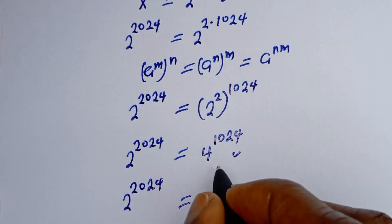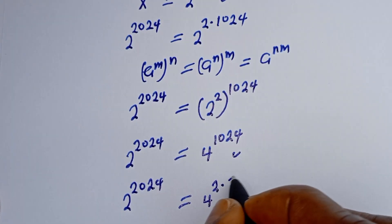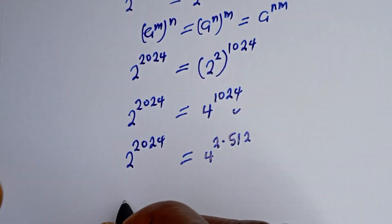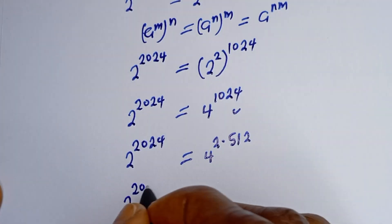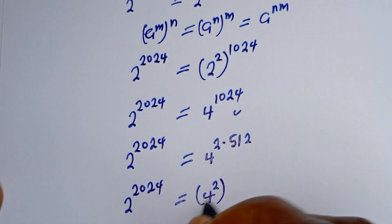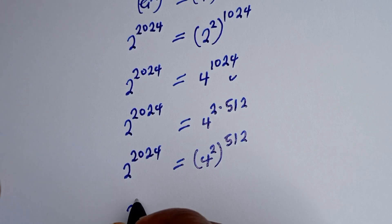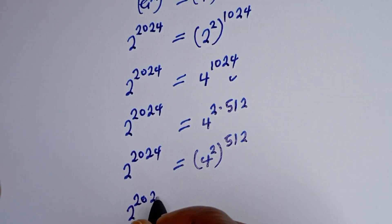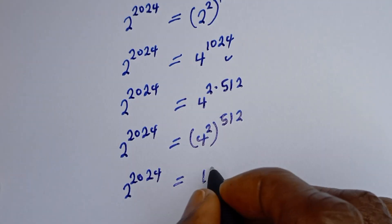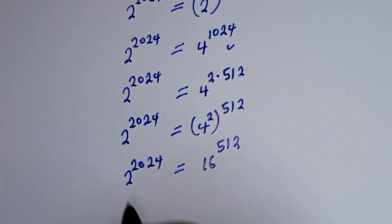Now let's consider this again: 2 to the power of 2024 can be written as 4 to the power of 2 multiplied by 512. So 2 to the power of 2024 is equal to 4 squared, to the power of 512. That gives us 2 to the power of 2024 is equal to 4 squared — which is 16 — to the power of 512.